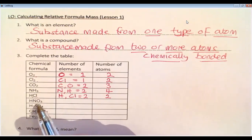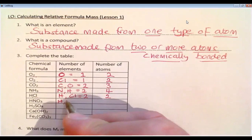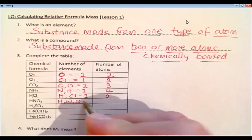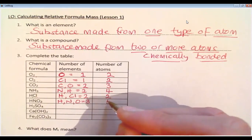Then I have HNO3, which is hydrogen nitrate or nitric acid if we dissolve it into water. So we have H, we have N, and we have O. So that's one, two, three elements. But then if we count up the number of atoms, we've got three oxygens plus one nitrogen plus one hydrogen, which equals five.